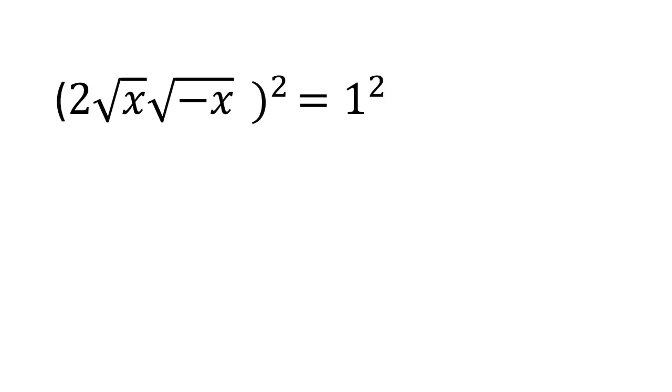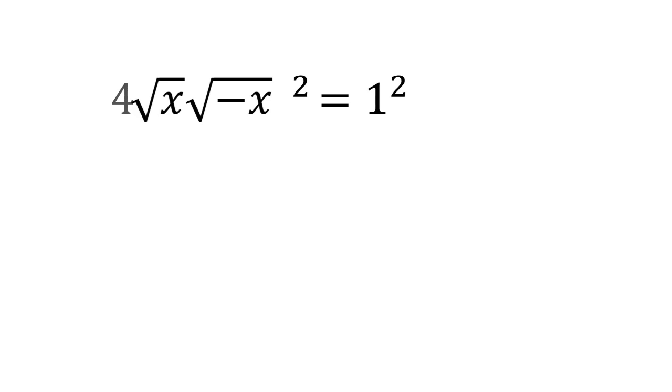Now again, squaring on both sides, we get (2√x times √(-x))² equal to 1². Now we get 4 times (√x times √(-x))².